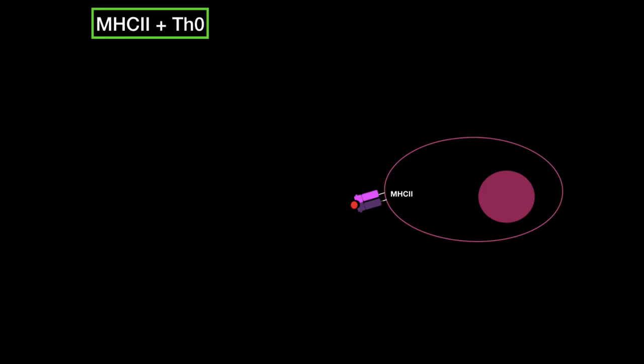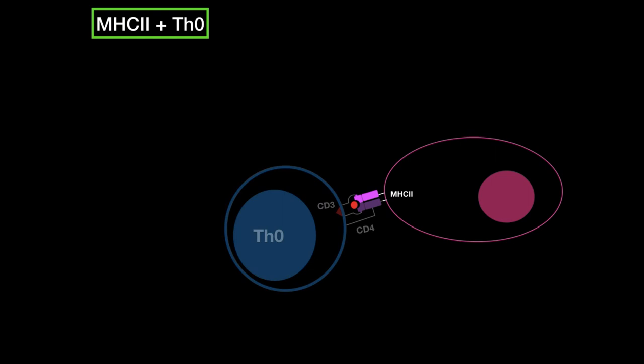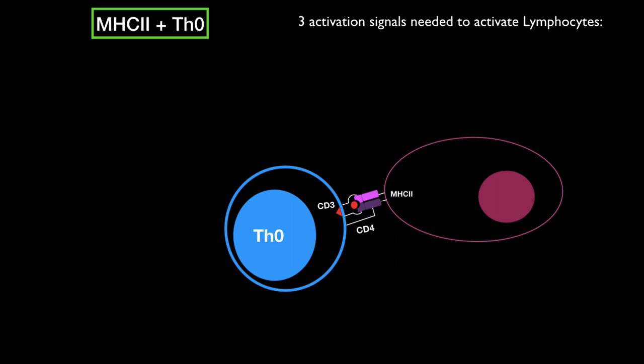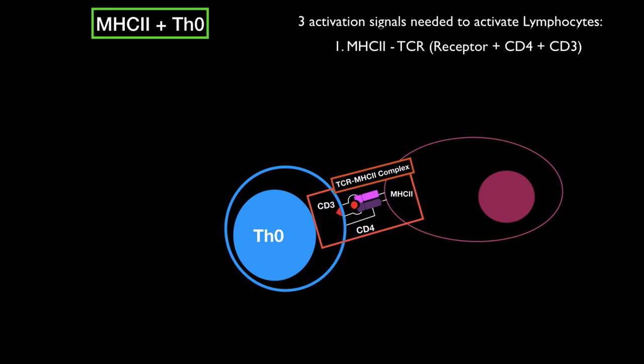Now the peptide is presented on an MHC class 2 molecule — this is the third step. This peptide is presented to a naive T helper cell in the secondary lymphoid organs, like the spleen or the lymph node. Three signals are required to activate and differentiate this T helper cell. Our goal is to produce antibodies, so we need T helper cell 2, because they are the ones that best help activate B cells. T helper cell 1 has more to do with inflammation and cytotoxicity, and we don't need that in humoral immune response. The first activation signal is when the T cell receptor binds to the MHC class 2 molecule — the TCR-MHC complex — docked and made stronger by CD4, which activates CD3 inside the T helper cell to send a positive signal to the nucleus.